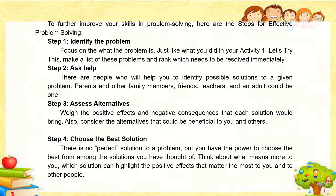To further improve your skills in problem solving, here are the steps for effective problem solving. Step 1: Identify the problem — focus on what the problem is. Make a list of these problems and rank which needs to be resolved immediately. Step 2: Ask help — there are people who will help you identify possible solutions: parents and other family members, friends, teachers, and other adults. Step 3: Assess alternatives — weigh the positive effects and negative consequences that each solution would bring. Also consider the alternatives that could be beneficial to you and others.